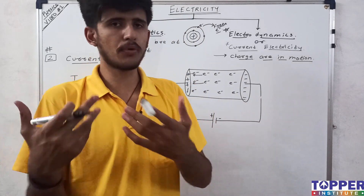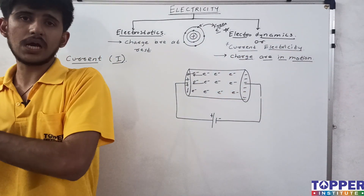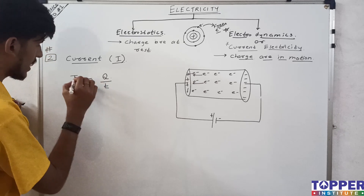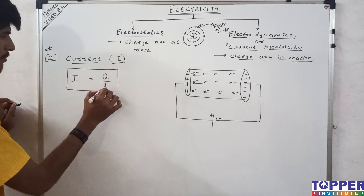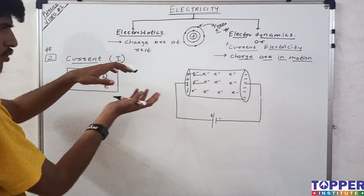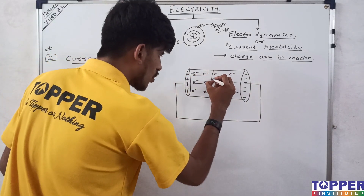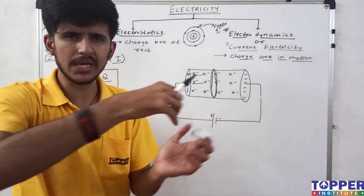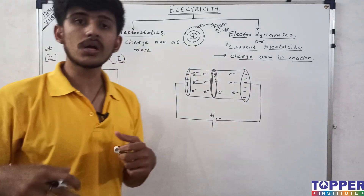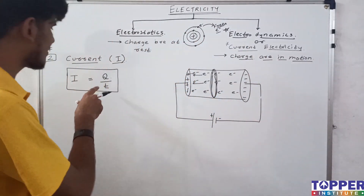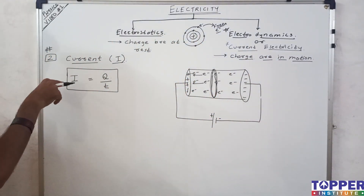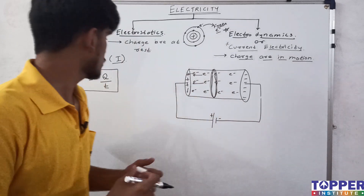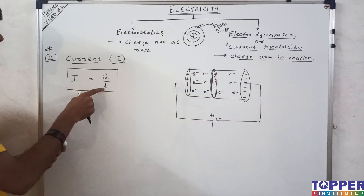The more electrons (or charge) that flow in less time through a cross-sectional area, the greater the current. This is a very simple formula and it is also the definition: current in a conductor is defined as the rate of flow of charge through a cross-sectional area per unit time. Mathematically, I = Q / t.